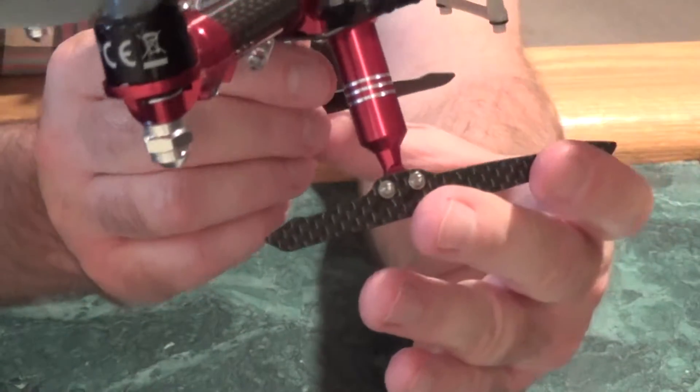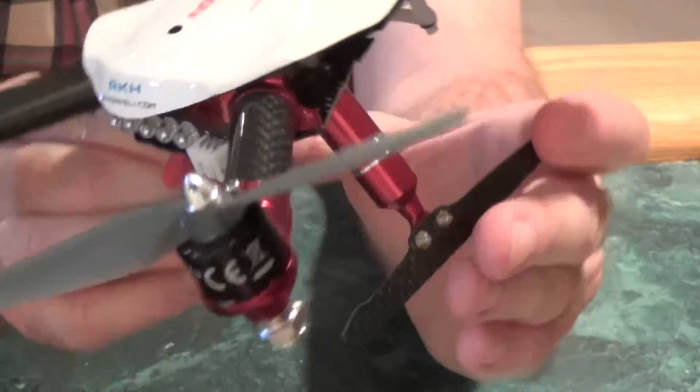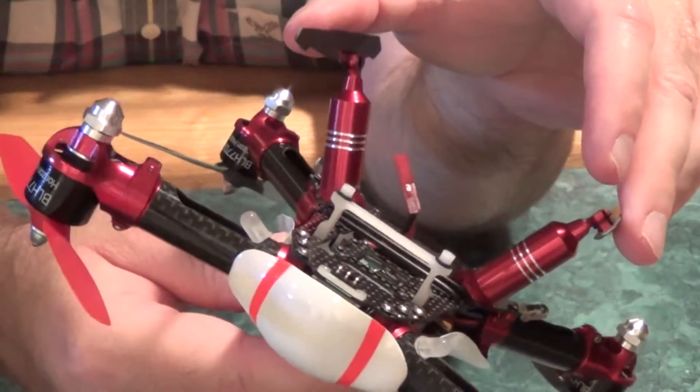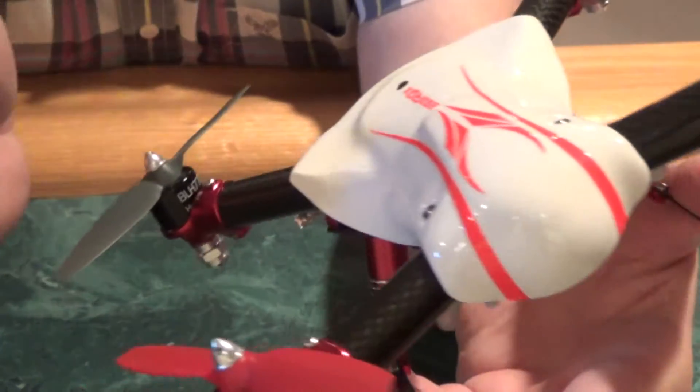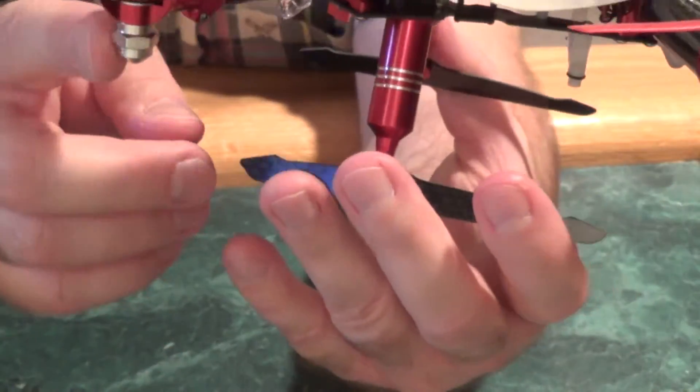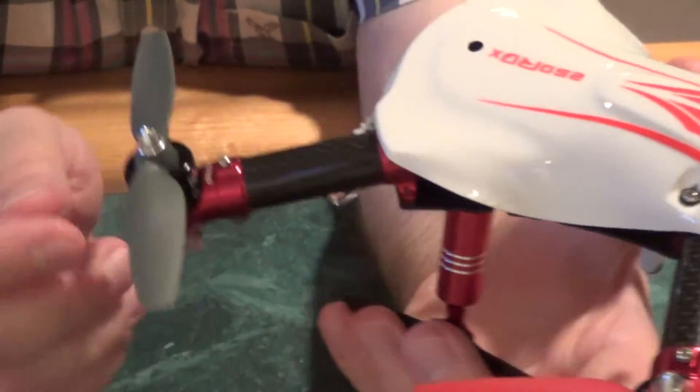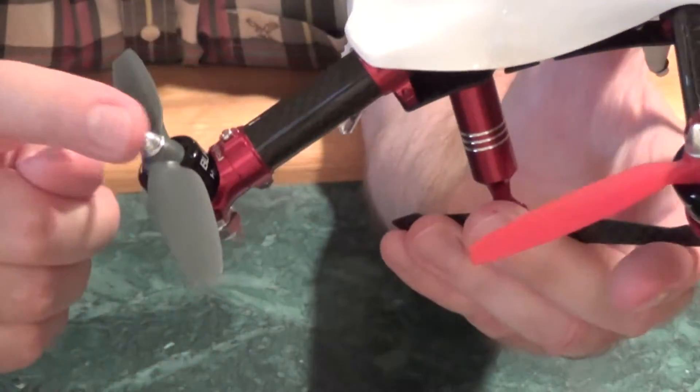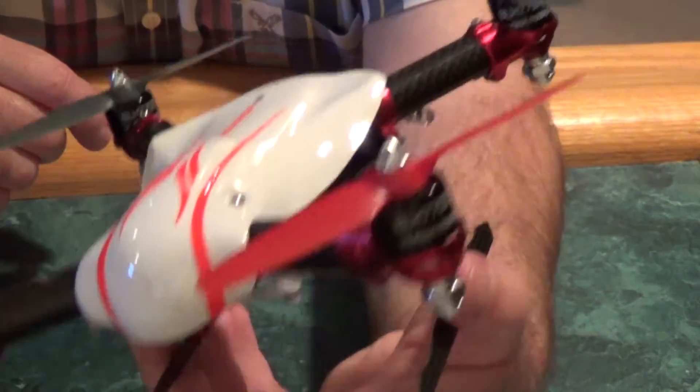And I went with the Racing, or not the Racing, the red aluminum, anodized aluminum here. Looks real sharp. And I went with the brushed, just a brushed, silver aluminum here for the nut and the prop nut on all four motors.